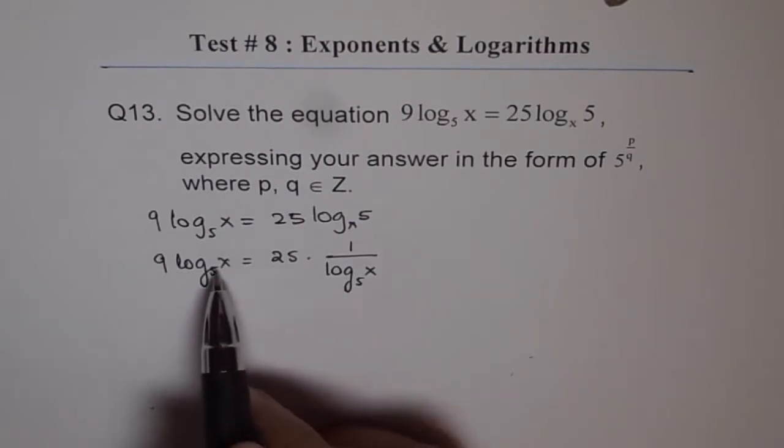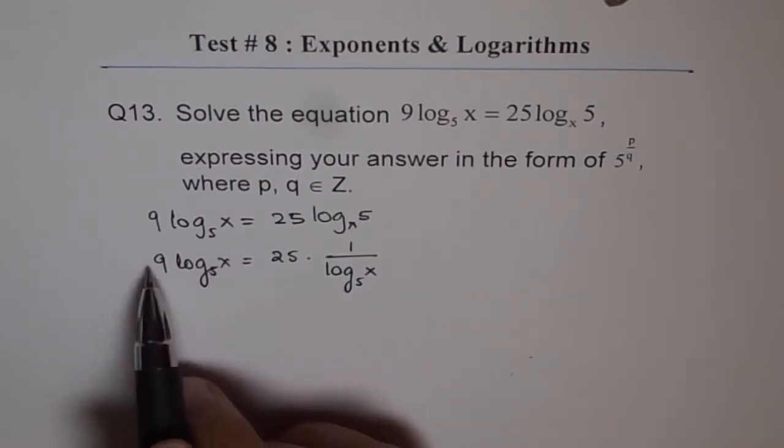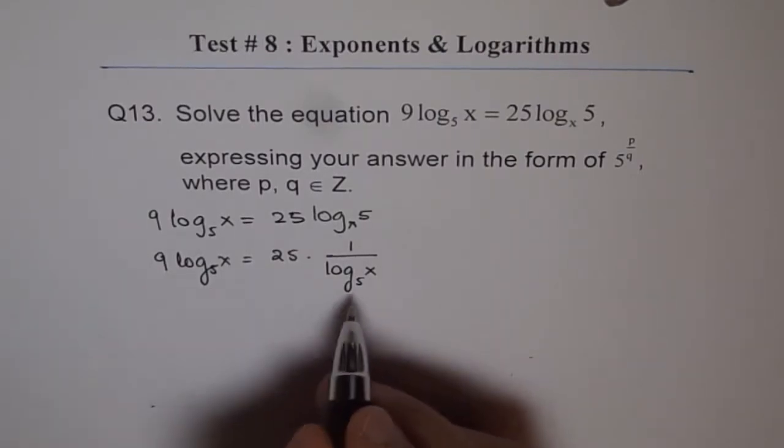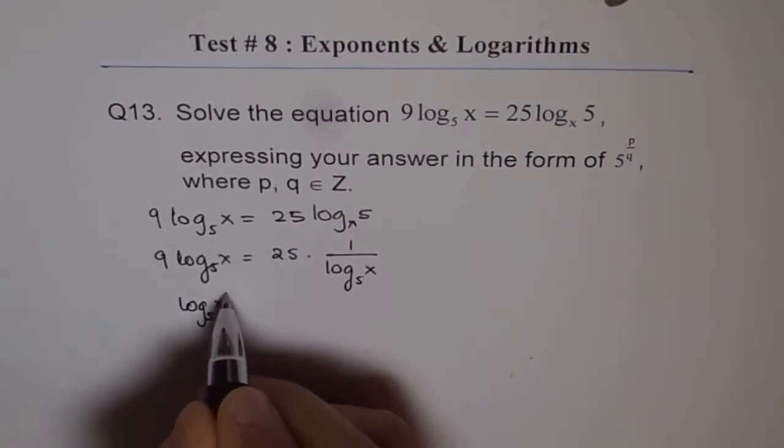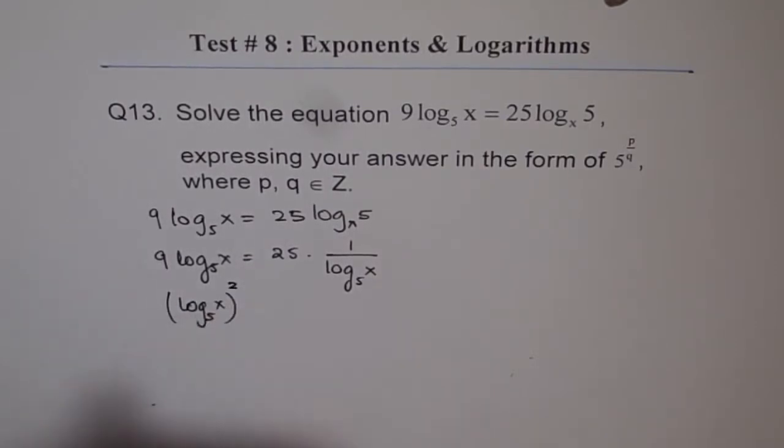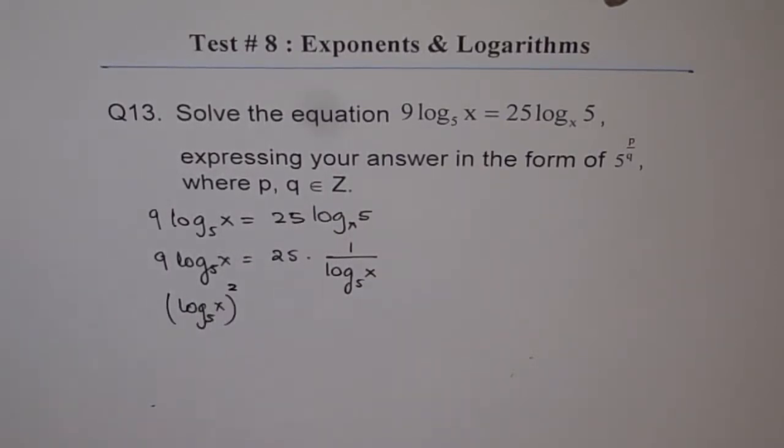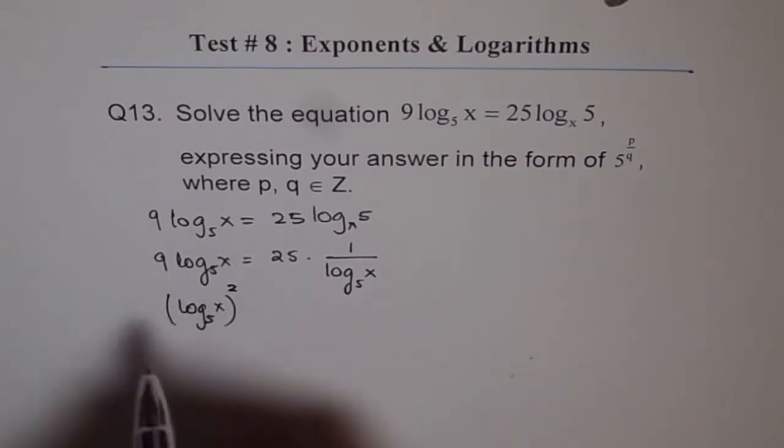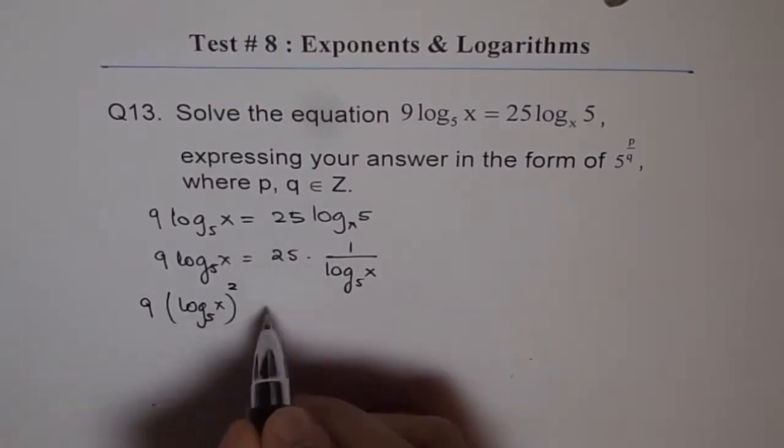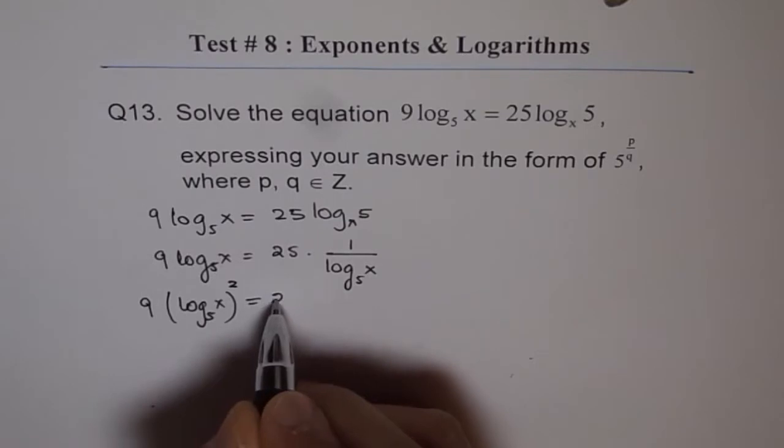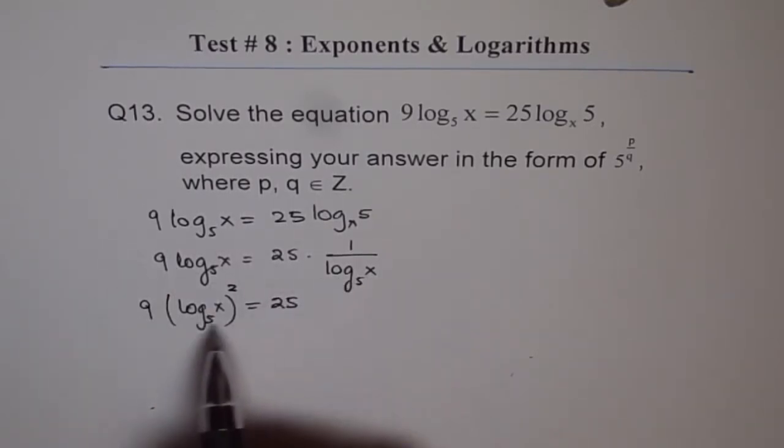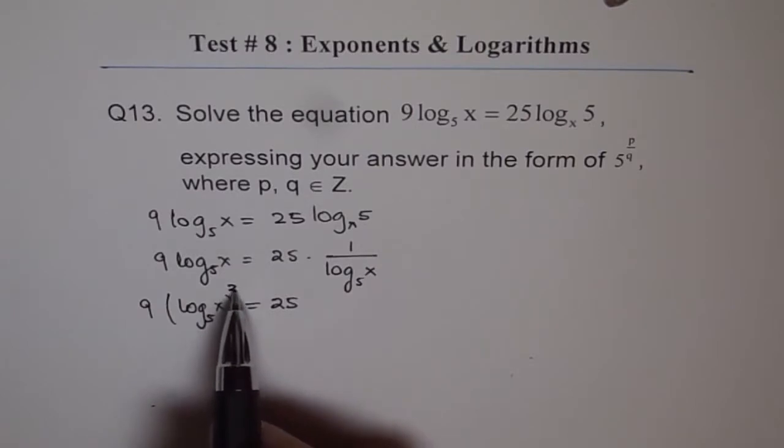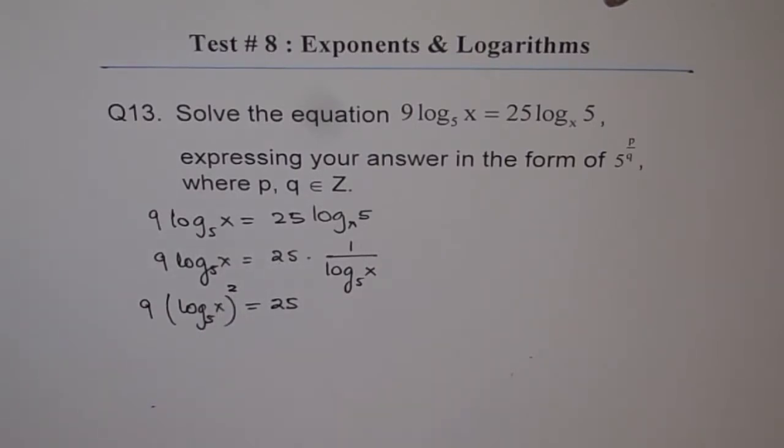Now, from here, we'll cross-multiply. We'll multiply both sides by log 5 of x and divide by 9. So, when we multiply, we get here log 5 of x whole square. Do you see that? So, I'm putting square here to make things very simple. So, let me write first like this itself, and then I'll divide by 9. So, I just multiplied by log 5 of x on both the sides.